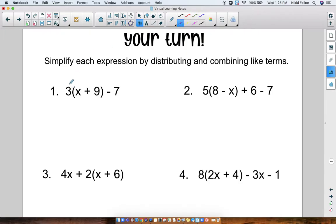So for number 1, hopefully you distributed in this problem. We have 3 times x plus 9 minus 7. So hopefully you did 3 times x, which is 3x, and then 3 times 9, which is 27. And then we bring down the minus 7. Well, the only like terms here are 27 minus 7. So my simplified expression would be 3x plus 20. That would be my answer.